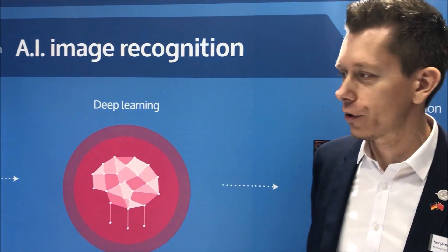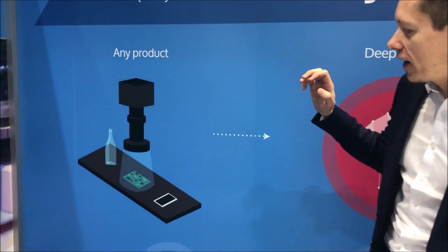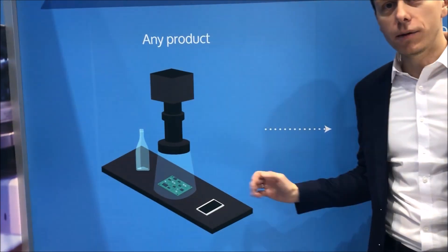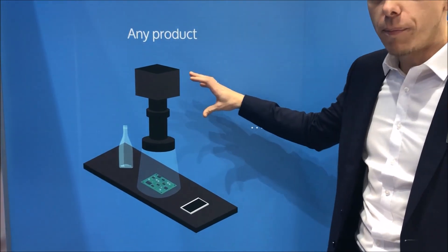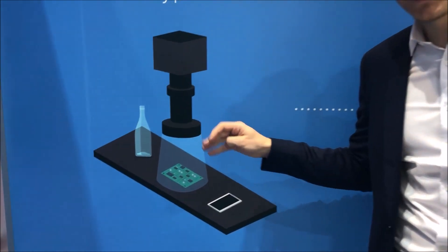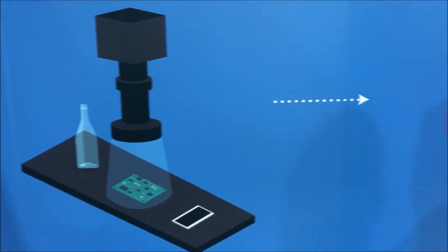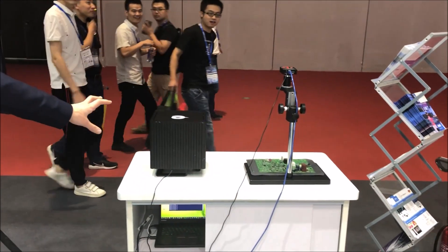Hi, this is Ben from Elunic and I can show you what our deep learning solutions can do. Our solutions can detect defects in any kind of product in production lines by using either a fixed camera or a portable camera which takes images from the products being produced. These images are then processed by our deep learning solutions either in the cloud or on a fixed hardware in a factory, like our factory cube.